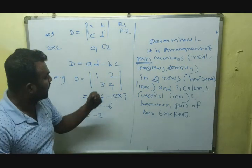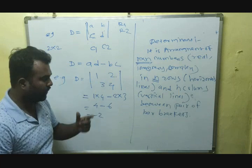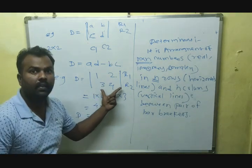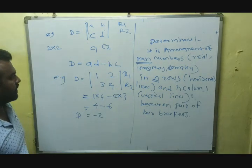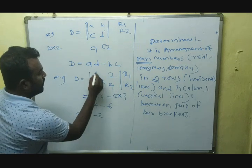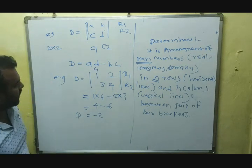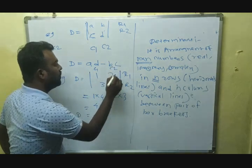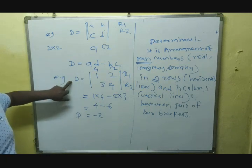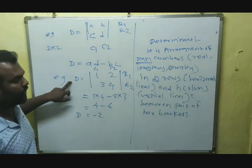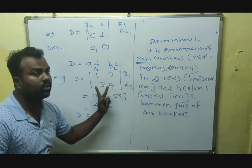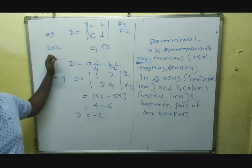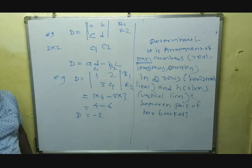In the first row, elements are 1 and 2. In the second row, elements are 3 and 4. In the first column, elements are 1 and 3. In the second column, elements are 2 and 4. This is a determinant of order 2 by 2 because it contains 2 rows and 2 columns. This is the definition of a determinant.